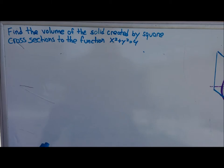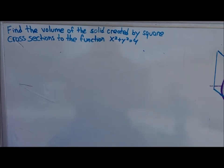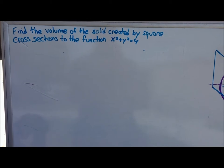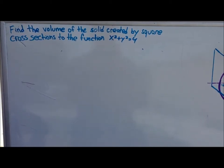So here we have a basic problem of cross sections. Find the volume of the solid created by square cross sections to the function x squared plus y squared equals 4.